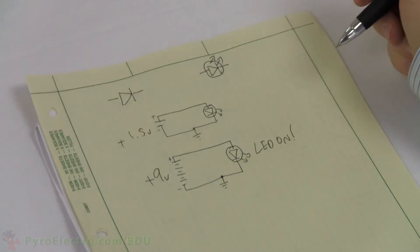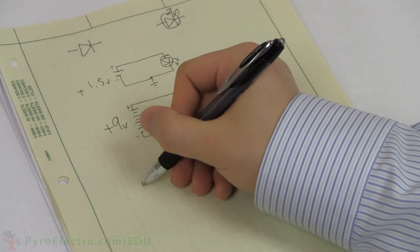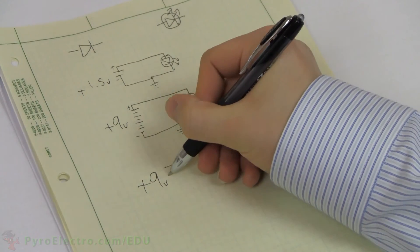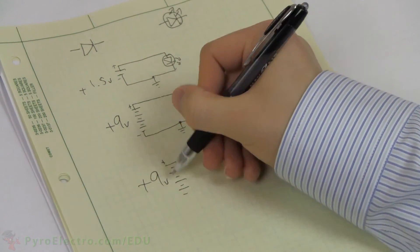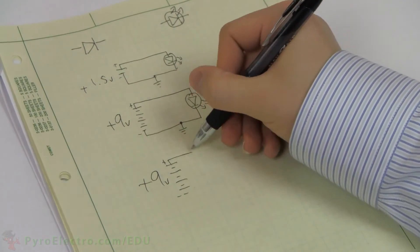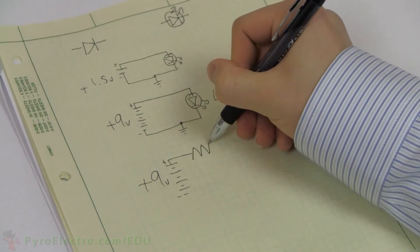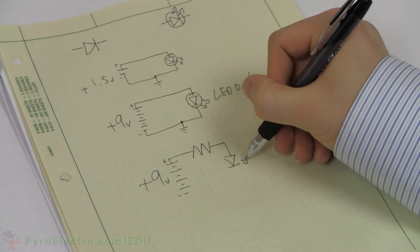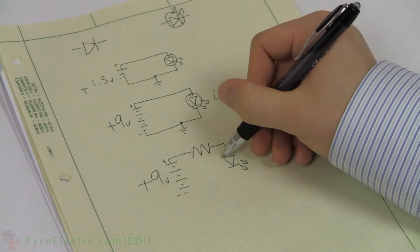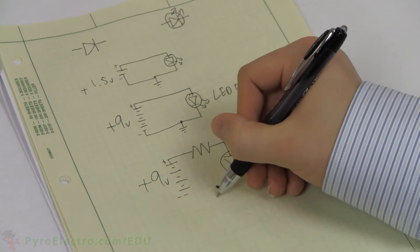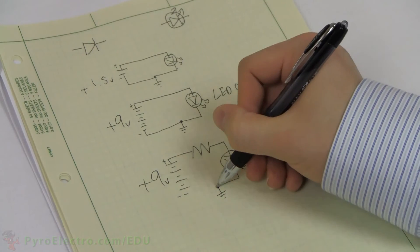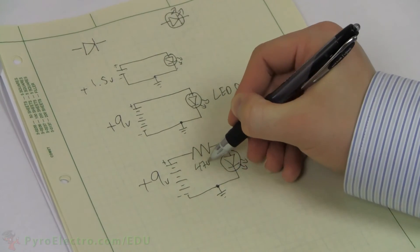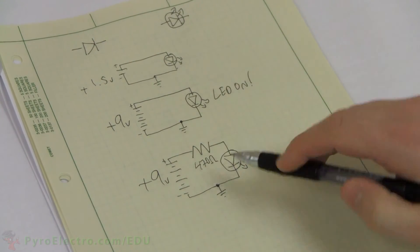The LED was super bright because typically LEDs only require 2–5mA of current, and without a current limiting resistor before the LED, a very large amount of current flowed through it, probably damaging it. So you usually don't want to connect an LED directly to a battery.